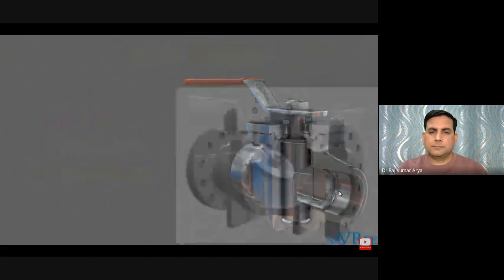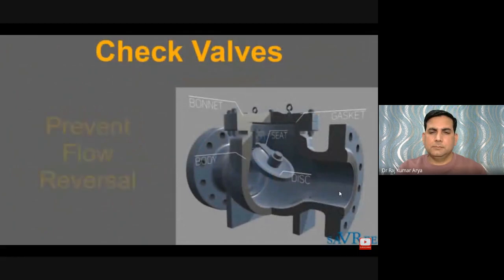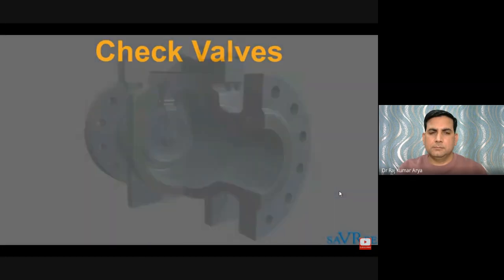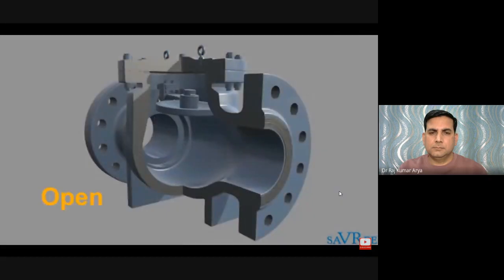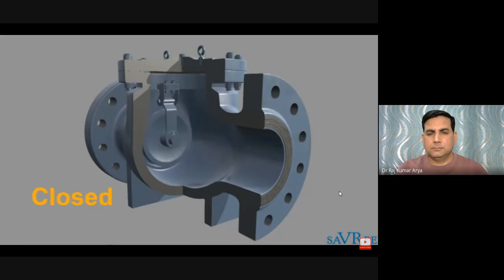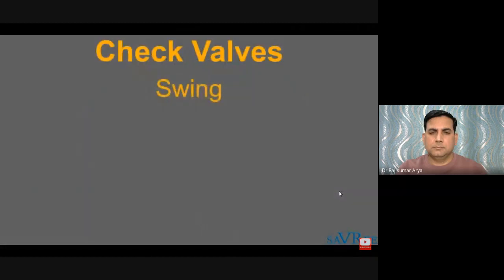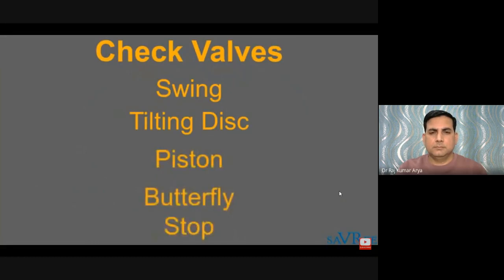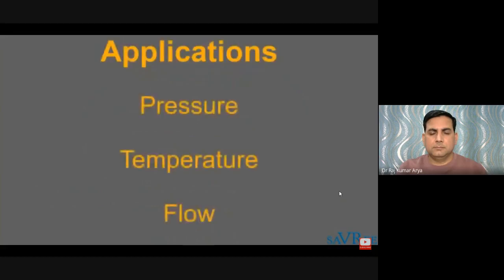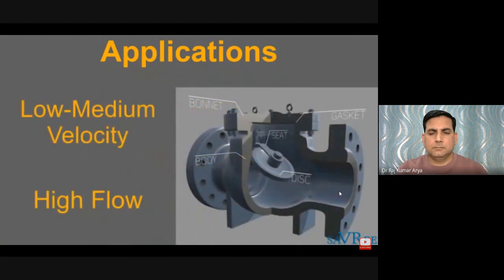Check valves are designed to prevent the reversal of flow in a piping system. They are activated by the flow of material in the pipeline: the pressure of the fluid opens the valve, while any reversal of flow closes it. Closure is accomplished by the weight of the check mechanism, back pressure, a spring, or any combination of these. The most common types are swing, tilting disc, piston, butterfly, and stop valves. The type used depends on system pressure, temperature, and flow requirements. Swing check valves are well suited for medium velocity, high volume flow applications with a relatively low pressure drop.